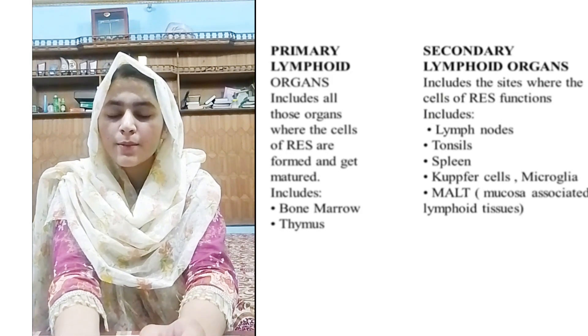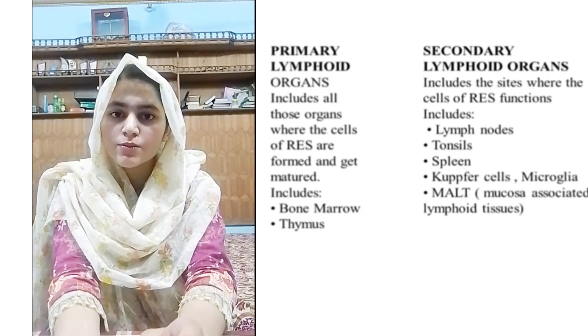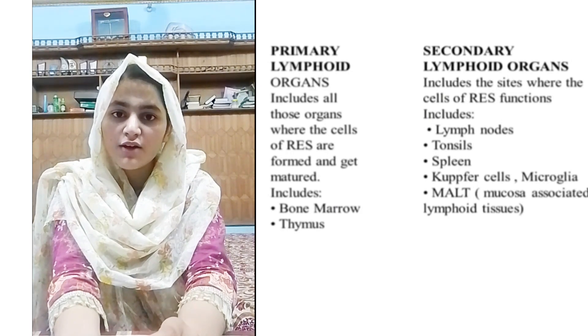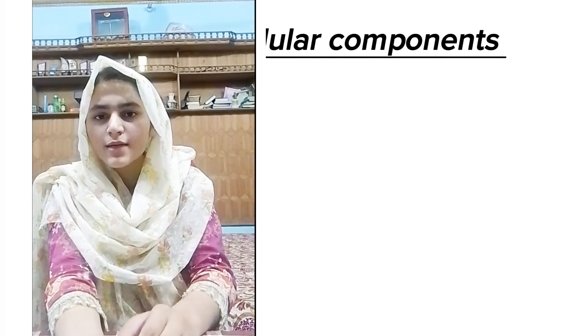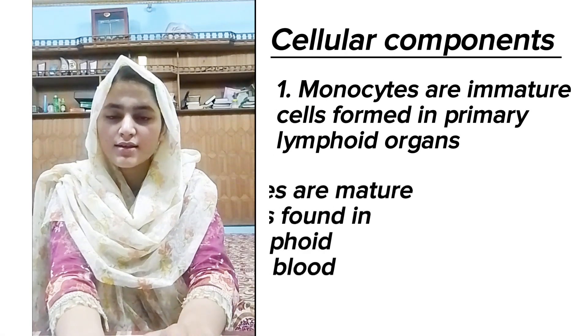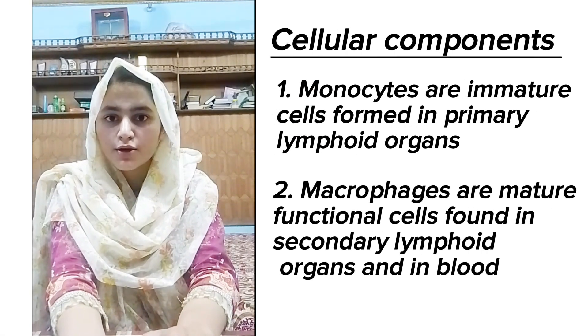The secondary lymphoid organs include lymph nodes, spleen, tonsils, liver, Peyer's patches in the small intestine, and alveolar cells in the lungs. The reticulo-endothelial cells are the functional unit cells of this system, and these are further classified into two types: monocytes and macrophages.